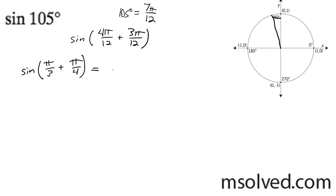Now we can go ahead and figure out what this is. So it's going to be sin(π/3)cos(π/4) plus sin(π/4) times cos(π/3).